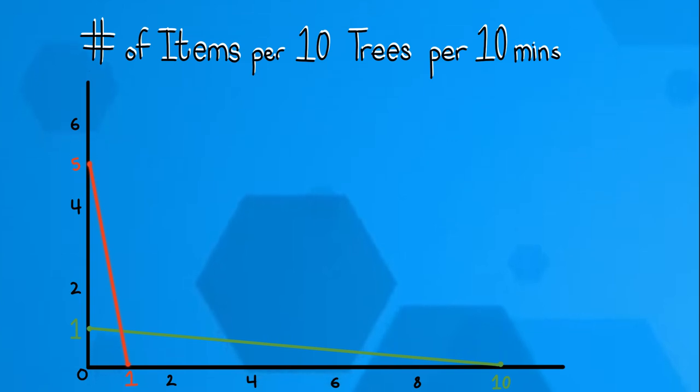The red here represents the Paper Kingdom. If they make zero sheets of cardboard, they can make five birdhouses. And if they make zero birdhouses, they can make one sheet of cardboard. The green represents Cardboard Kingdom. If they make zero sheets of cardboard, they can make one birdhouse. If they make zero birdhouses, they can make 10 sheets of cardboard.